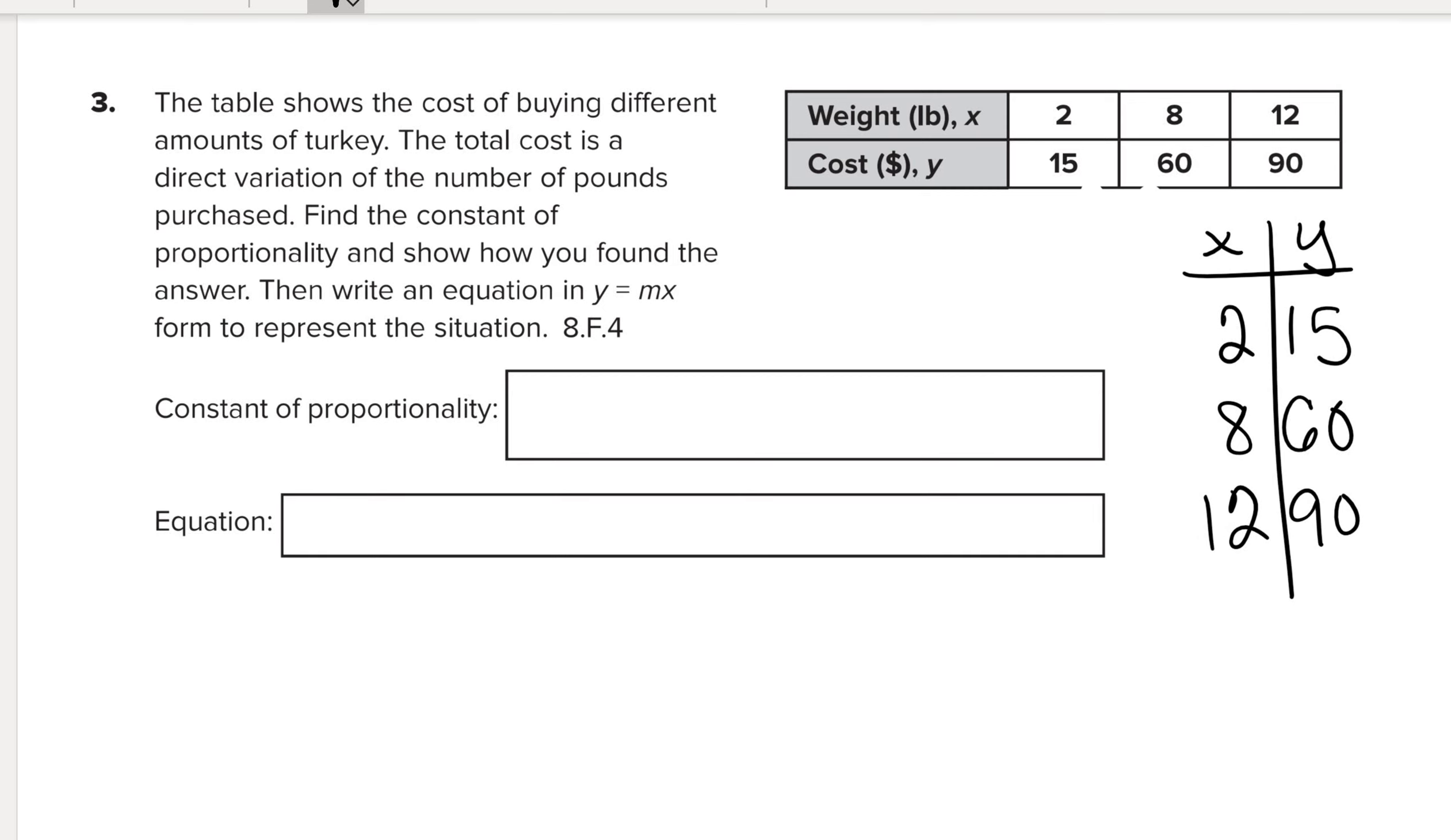So if I work from 15 to 60 on a number line, that means I increased by 45. And if I started a number line at 2 and I moved to 8, that means it increased by 6. So let's do the next change. If I start at 60 and I go to 90, that's an increase of 30. And if I move from 8 to 12, that's an increase of 4.